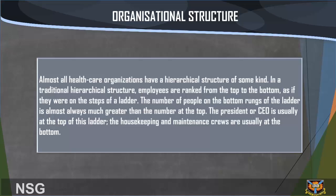Organizational structure: Almost all healthcare organizations have a hierarchical structure of some kind. In a traditional hierarchical structure, employees are ranked from top to bottom, as if on the steps of a ladder. The number of people at the bottom is almost always much greater than those at the top. The president or CEO is usually at the top of this ladder, while housekeeping and maintenance crews are usually at the bottom.